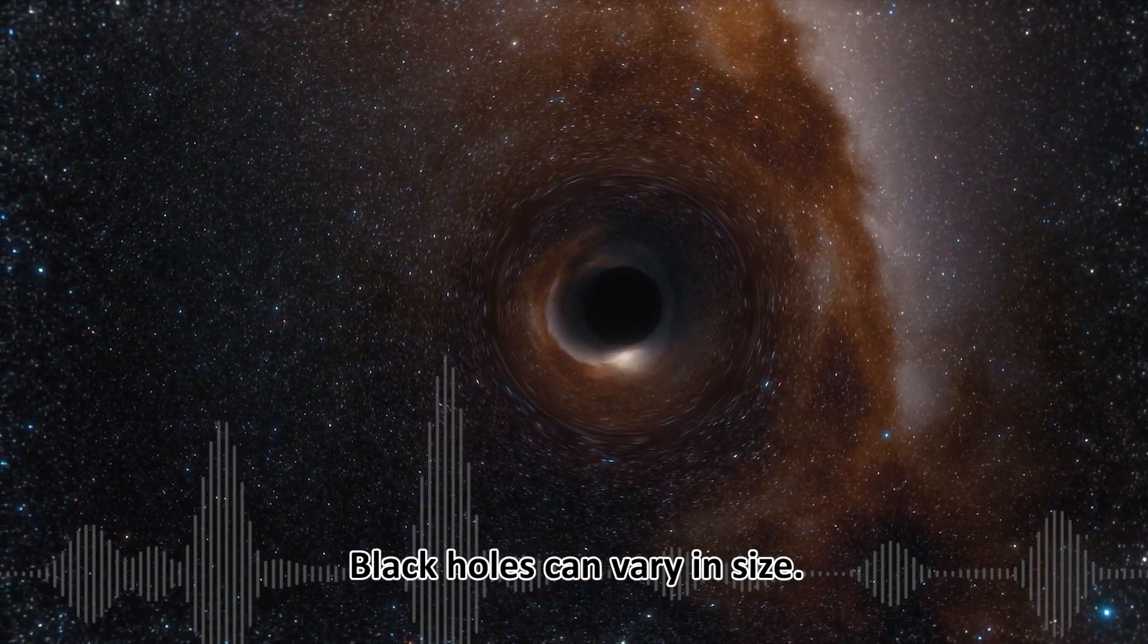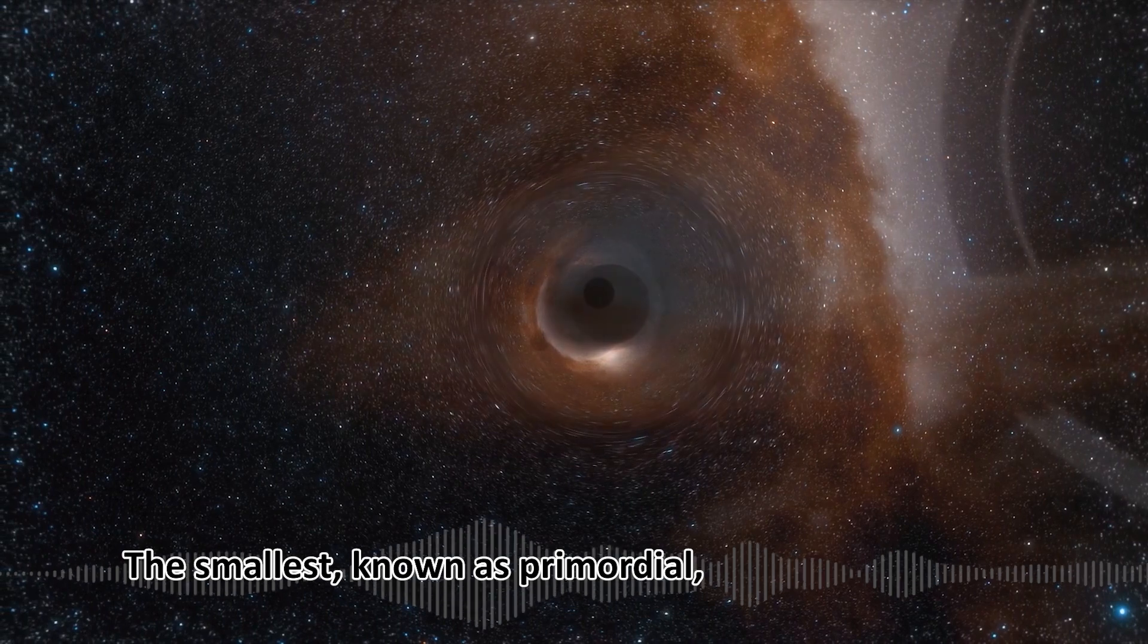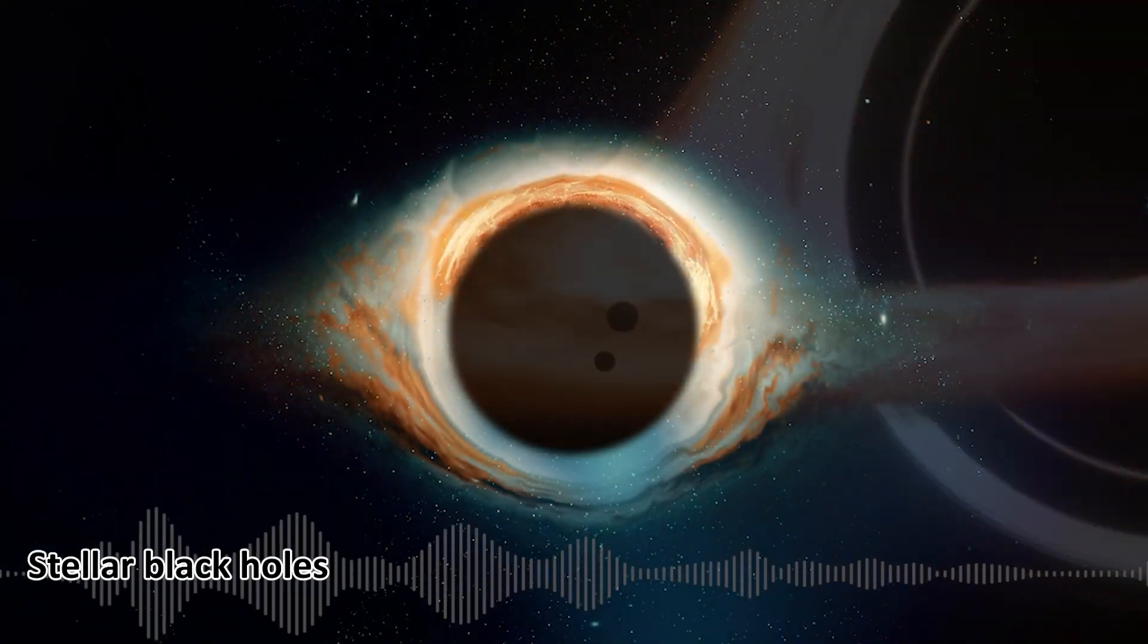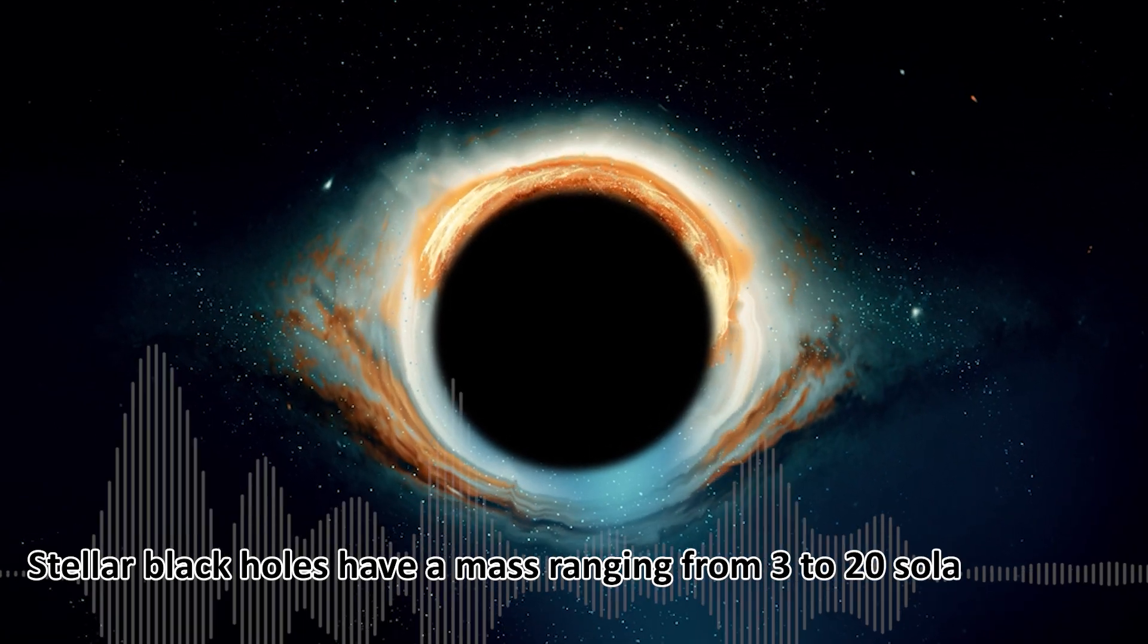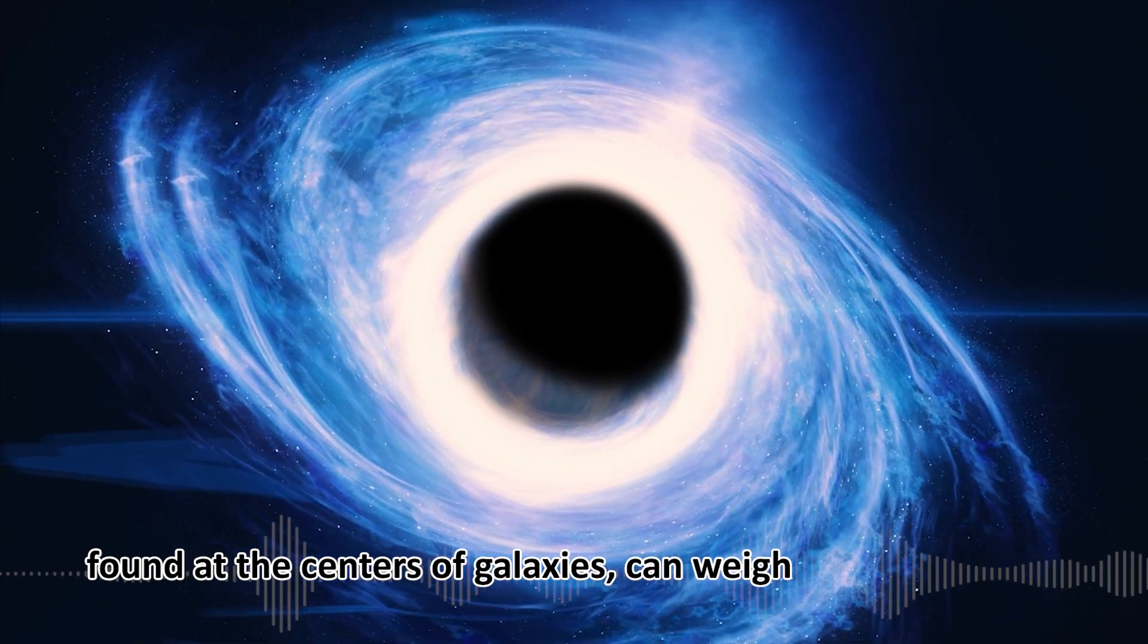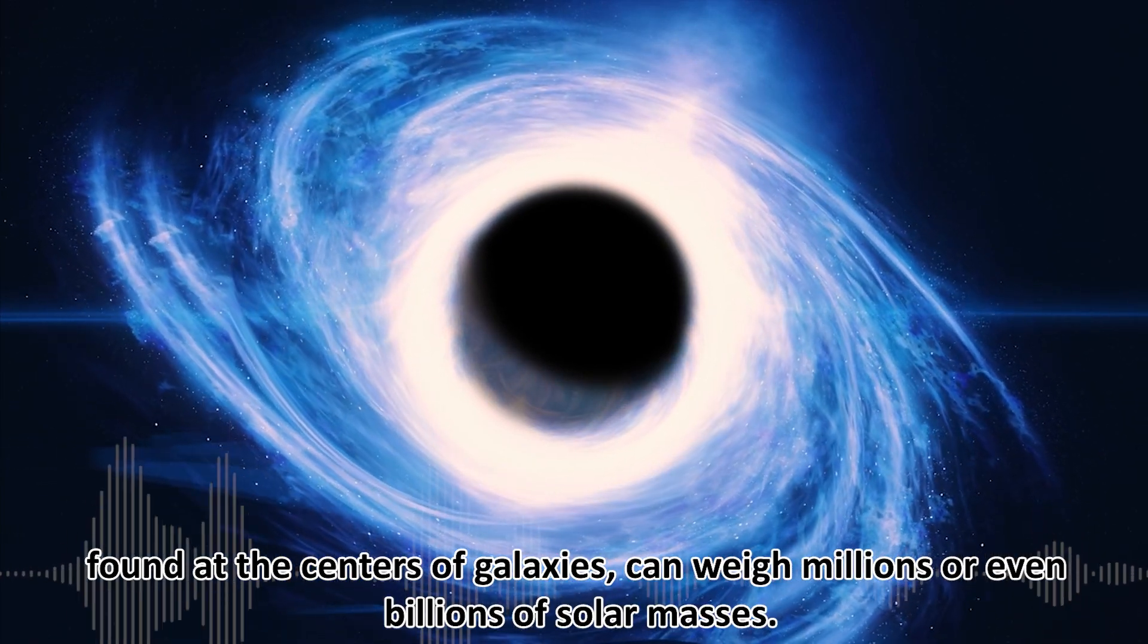Black holes can vary in size. The smallest, known as primordial, might have formed right after the Big Bang. Stellar black holes have a mass ranging from 3 to 20 solar masses. Supermassive black holes, found at the centers of galaxies, can weigh millions or even billions of solar masses.